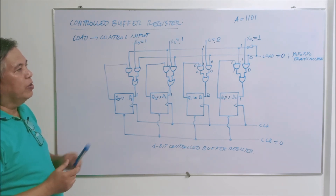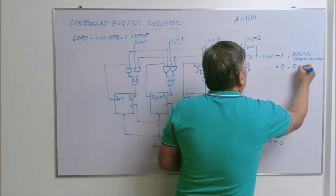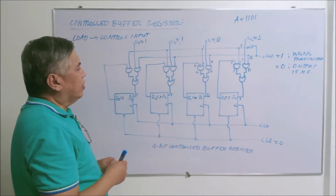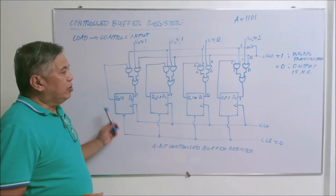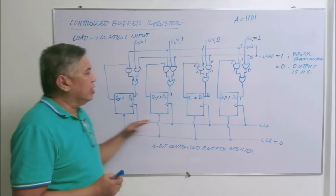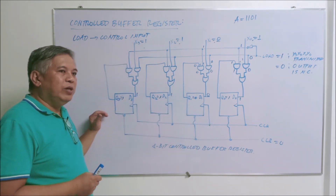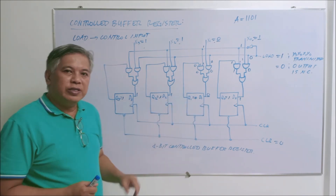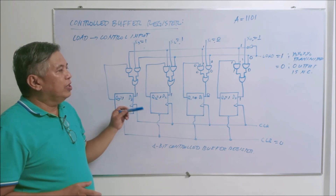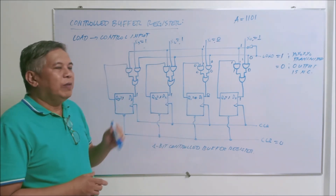So that is how it works: if load equals 0, the output remains unchanged — no new condition is loaded. This is a 4-bit buffer register. If you have a 4-bit computer, this is your buffer register. For an 8-bit computer, you need 8 D flip-flops; for 16 bits, 16 flip-flops; for a 32-bit computer, 32 flip-flops; and for 64-bit, you need 64 flip-flops. It depends on the capability of your computer.